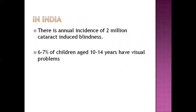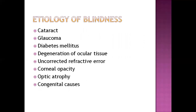In India there is an annual incidence of 2 million cataract-induced blindness, and 6 to 7 percent of children aged 10 to 14 years have visual problems. The etiology of blindness includes cataract, glaucoma, diabetes mellitus, degeneration of ocular tissue, uncorrected refractive error, corneal opacity, optic atrophy, and congenital causes.